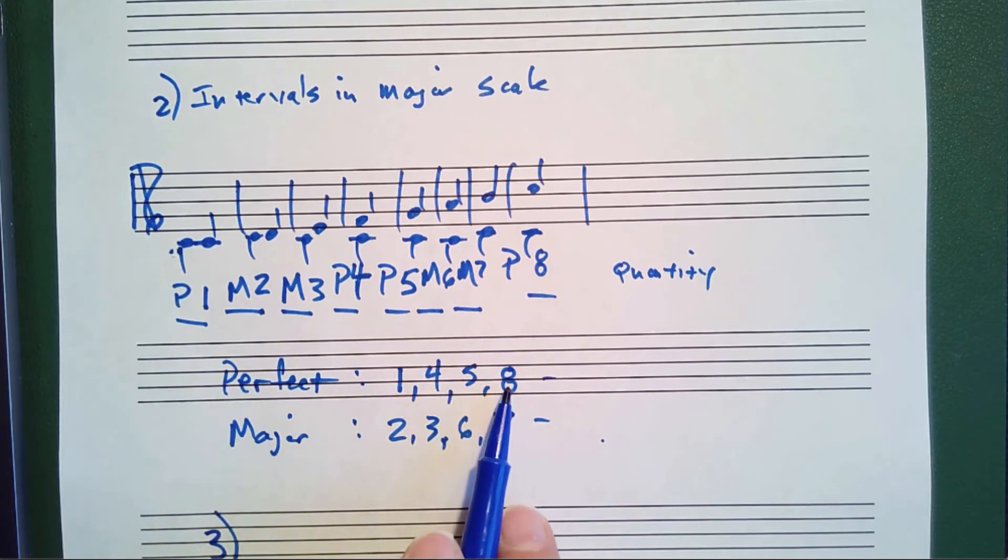Unisons, fourths, fifths, and octaves are perfect. Seconds, thirds, sixths, and sevenths are major.